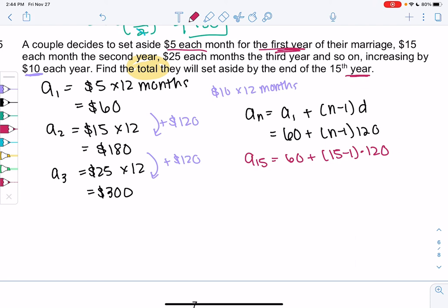I got 1740. And that doesn't represent total. That would just be how much they saved that individual year. So total means we want the sum after 15 years.